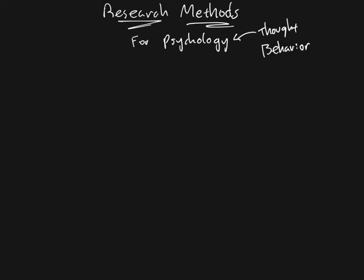The first thing the textbook authors are going to try to convince you of is that research methods are useful. The whole first section tries to show you why you would want to study research methods, because obviously a lot of you are in this class because it's a requirement for a psychology major. But why might it actually be useful? Well, if you're doing research yourself, you obviously need to know research methods. But even if you're planning to go into clinical psychology and become a therapist, you might still want to consider doing some research as a student.